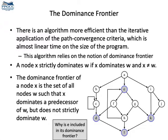But why does e belong to its own dominance frontier? Well, e dominates h, and h is a predecessor of e itself. However, e does not dominate itself strictly — and as a matter of fact, no node could dominate itself strictly by definition.